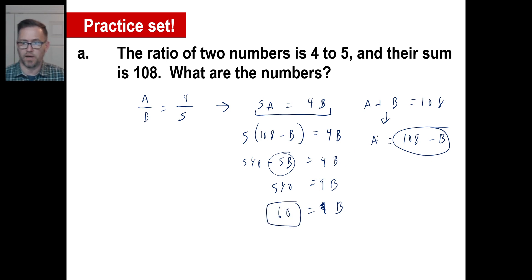If B is 60, A is going to be 108 minus 60. So A is going to be 48. Is their ratio 4 to 5? Well, 12 goes into 48, four times. 12 goes into 60, five times. Zing. We got it. There you go. Go ahead and pause it and try practice problem B.